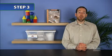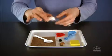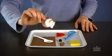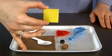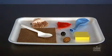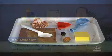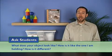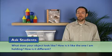Next, distribute a sorting tray of items to each team of two and give the students some time to examine and manipulate the objects on their trays so they can learn about the characteristics of each object. Then, hold up a marble and tell students to look for a similar object on their trays. Ask, what does your object look like? How is it like the one I'm holding? How is it different?